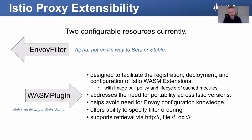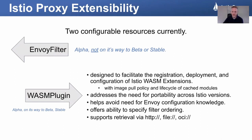Istio proxy extensibility has primarily two configurable resources for managing Envoy filters and Wasm plugins in Istio. One of those — and probably the eldest of the two — is EnvoyFilter. It's in alpha, and it's not likely to make its way into beta or stable. Rather, its younger sibling, the WasmPlugin, is a newer resource, still in alpha as well but probably on its way towards beta and towards stable at some point.